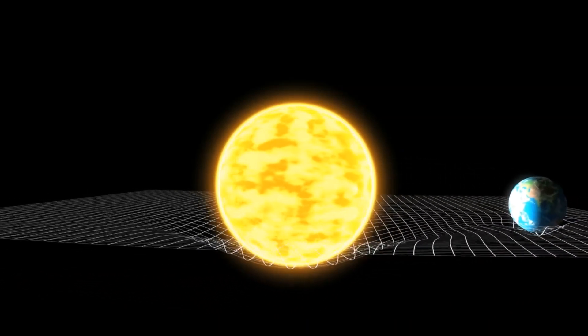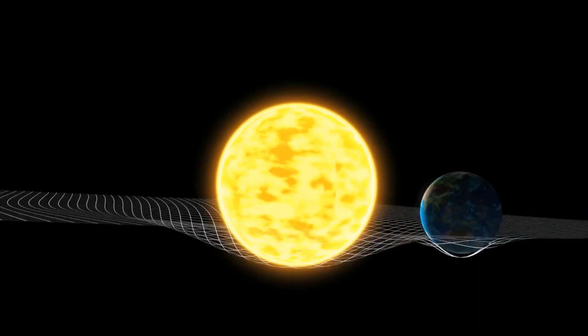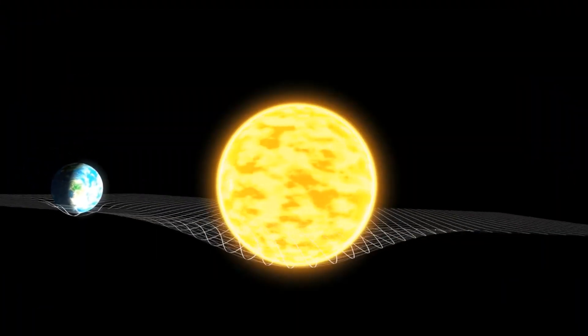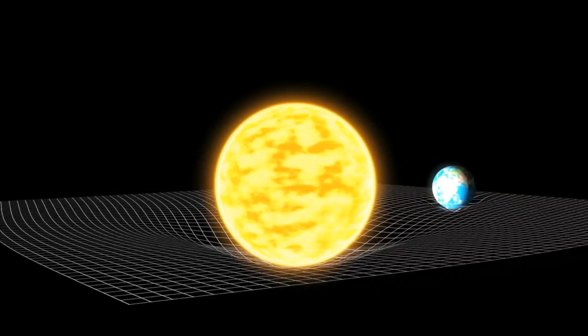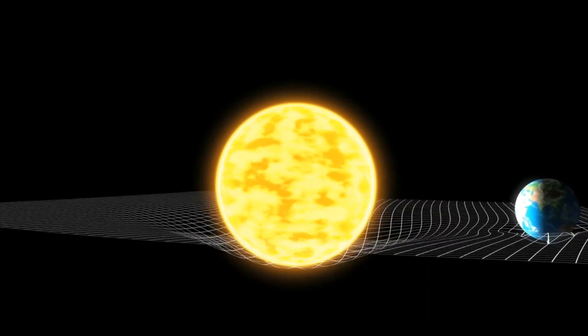However, the presence of a massive cosmic object curves the space-time. This can be simulated by placing a heavy ball on a rubber sheet to create a cup-like depression. If you place a small marble near the depression, then it will roll down the depression as if it has been pulled by a force.